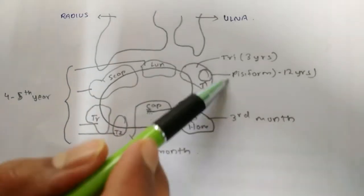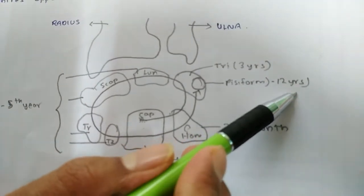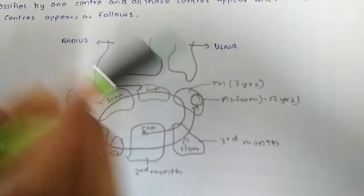And that last one, that is the pisiform, appears at twelve years. I hope you all understand this.